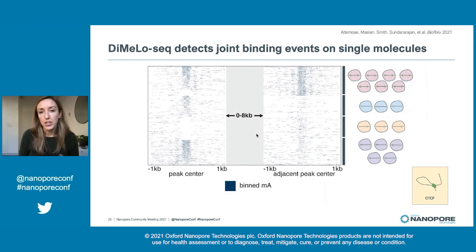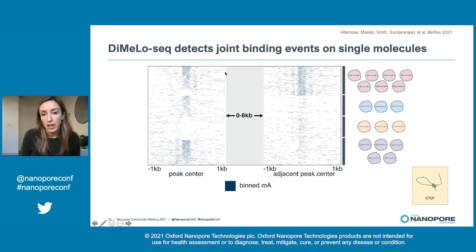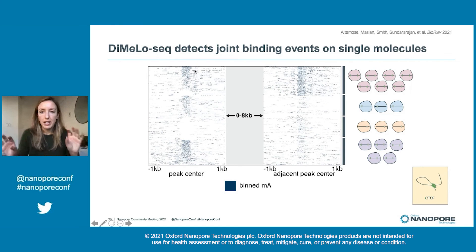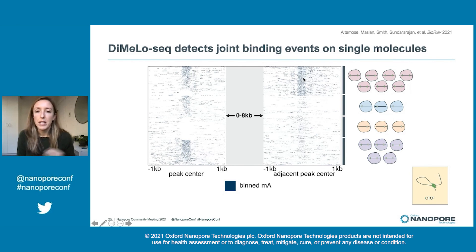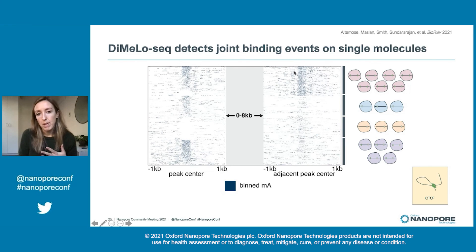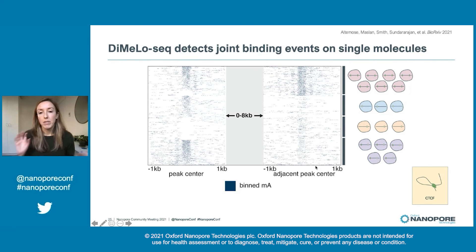We can also detect joint binding events on single molecules. Here we're again targeting CTCF, where each row is a single molecule of DNA, and we've anchored the ends on adjacent CTCF motifs. We can see regions where both sites tend to be bound, one or the other, or a bit of both. We can start to look at these coordinated dynamics of protein binding.